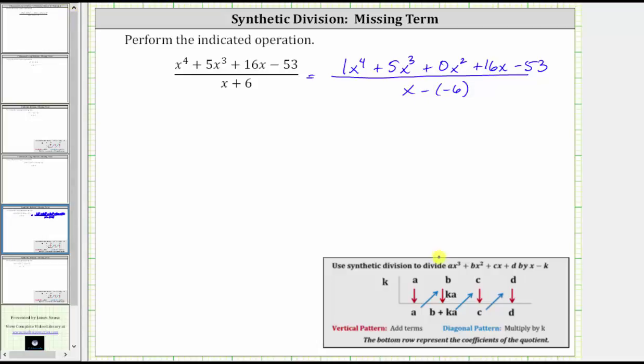And now to set up the table for synthetic division, we use the coefficients of the dividend as well as the constant term, which are one, five, zero, 16, and negative 53, as well as the value of k from the divisor in the form of x minus k, and therefore k is negative six.